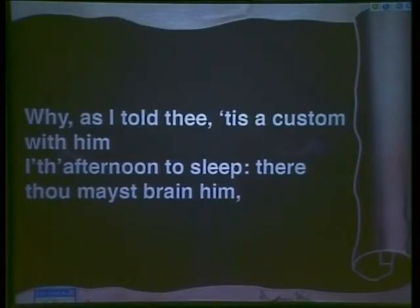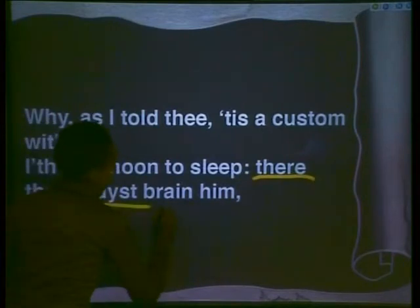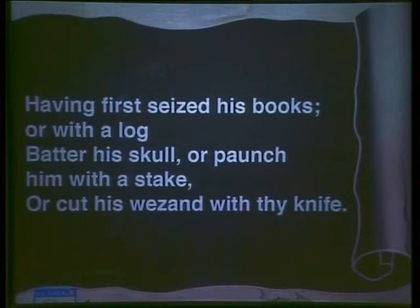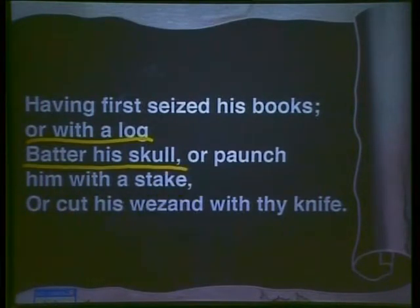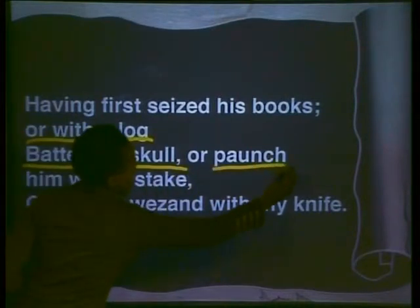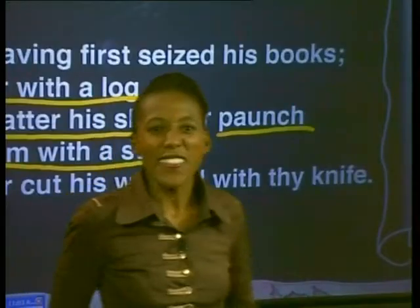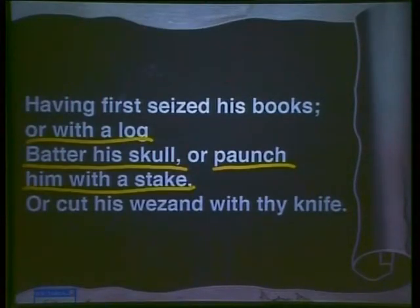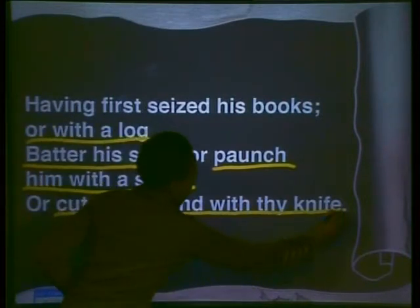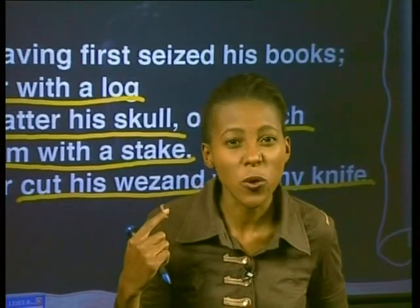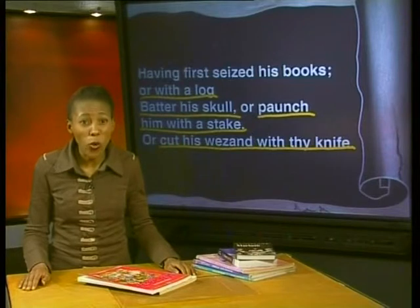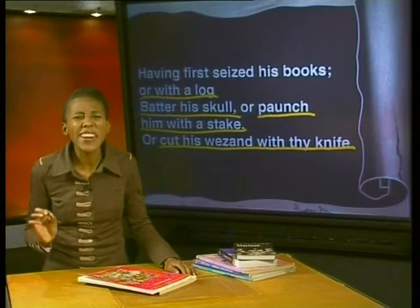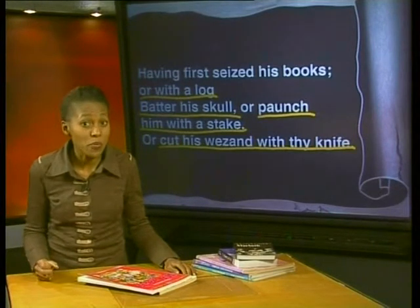There are some violent images in this extract. Did you notice? 'There thou mayst brain him, or with a log batter his skull, or paunch him with a stake' — this means to stab him in the stomach — 'or cut his wazened with thy knife' — to slit his throat or his windpipe. He really seems to be enjoying all the gory details. There's an intense pleasure in the brutal words that describe the savage ways in which Prospero can be killed.